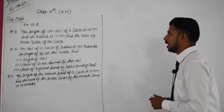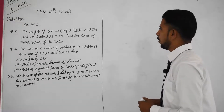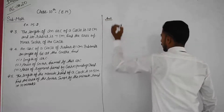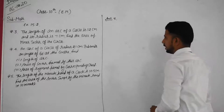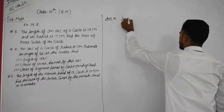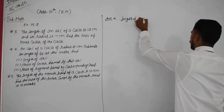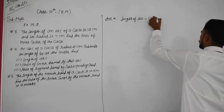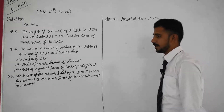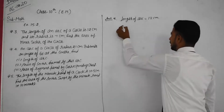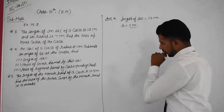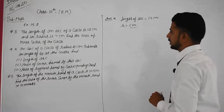Now question number 3. The length of an arc of a circle is 12 cm — so length of arc L is equal to 12 cm. And its radius is 7 cm, so R is equal to 7 cm. Find the area of the minor sector of the circle.